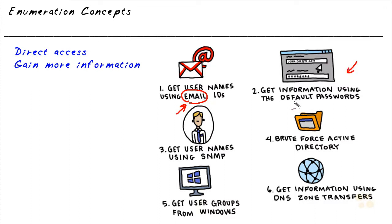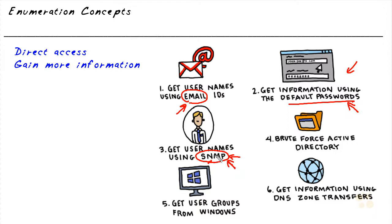Also, if systems are using default passwords — which is a terrible thing to do and it's done all the time — the default password for a router, switch, or other device is easy for an attacker to look up. If they use that password and it works, they can compromise the system. The early versions of SNMP were really poor regarding security, and if systems are still using SNMP with its defaults and very weak security, we could leverage that to extract additional information.